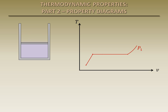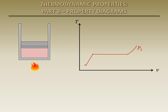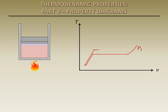Let's repeat this entire process. This time, suppose that more weight is added to the piston so that the substance is at a higher pressure. The specific volume of the compressed liquid is slightly smaller at this higher pressure. Also note that as the pressure increases, the temperature at which the substance begins to vaporize, or the saturation temperature, increases. As pressure increases, the specific volume of the saturated liquid increases, while the specific volume of the saturated vapor decreases.